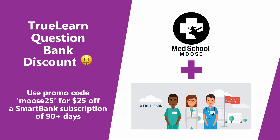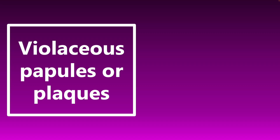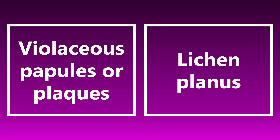Now let's jump into these buzzwords. First one: if you see violaceous papules or plaques, you should immediately be thinking of lichen planus. Remember, lichen planus is the skin condition with the 5Ps — polygonal, pruritic, papules, plaques, etc. If you see a description like that, your mind should immediately jump to lichen planus.